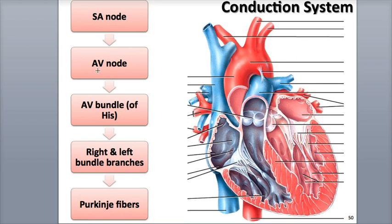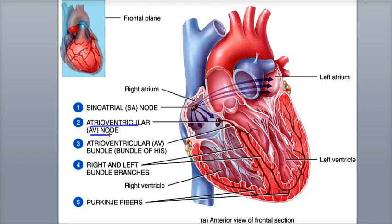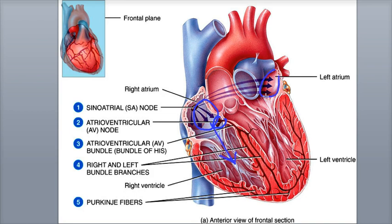Next, the action potential reaches the atrioventricular node, also called simply the AV node. The AV node is found in the interatrial septum, which is the partition between the right and left atrium. The action potential slows when it reaches the AV node due to variation in the cell structure of the fibers in the node. This slower speed is important because it gives extra time for the atria to finish pumping blood into the ventricles and for the ventricles to fill with blood.